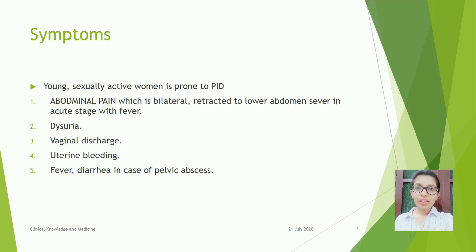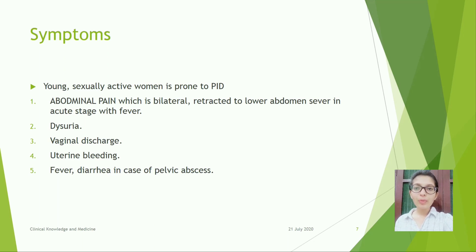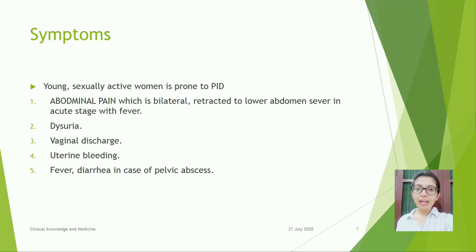Symptoms: young sexually active women are prone to PID. Abdominal pain which is bilateral, restricted to lower abdomen, severe in the acute stage with fever. Dysuria, vaginal discharge, uterine bleeding, fever, and diarrhea in case of pelvic abscess.